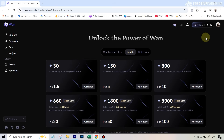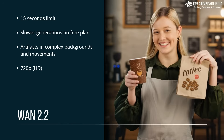Let's also look at the cons. The 15-second limit is restrictive — even 30 seconds would dramatically improve use cases. Slower generations are a problem on the free plan, especially with Character Swap, where you might wait 20 to 30 minutes. There are artifacts in complex situations, mainly with Character Swap when there's a lot going on in the background or when the subject makes many different movements. And resolution is currently capped at HD — if it were Full HD it would be much better, because right now it's a great fit for social media but for professional use you'll definitely need a separate upscaler. Overall, this is Wan 1.2.2 — a special video model where you also get what you don't pay for.